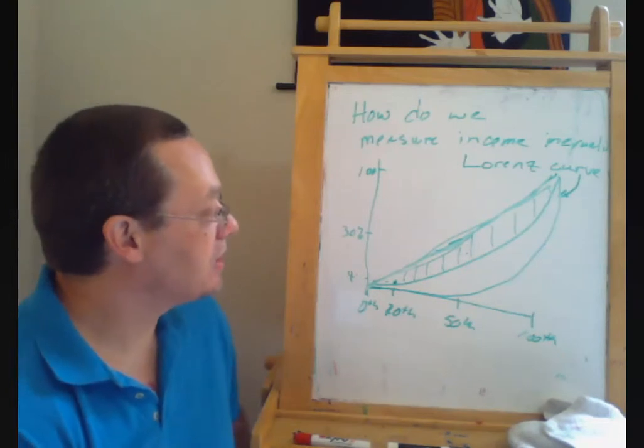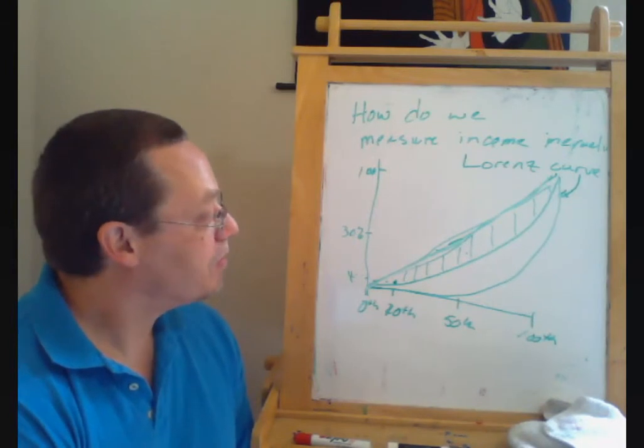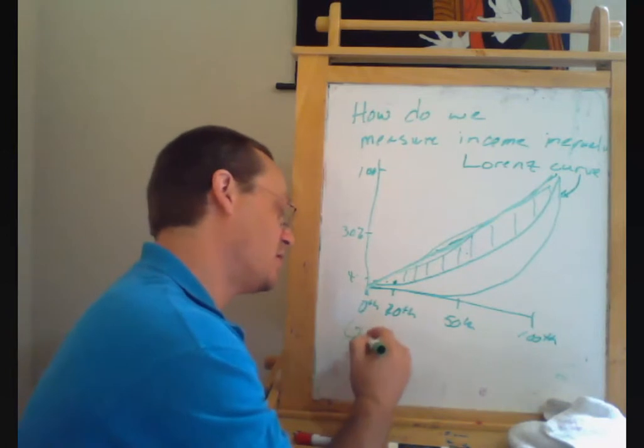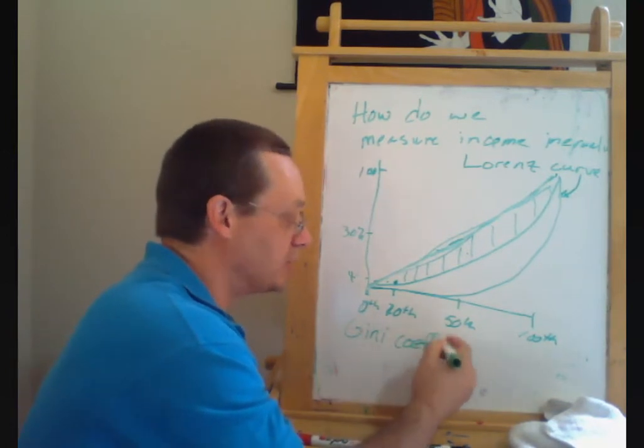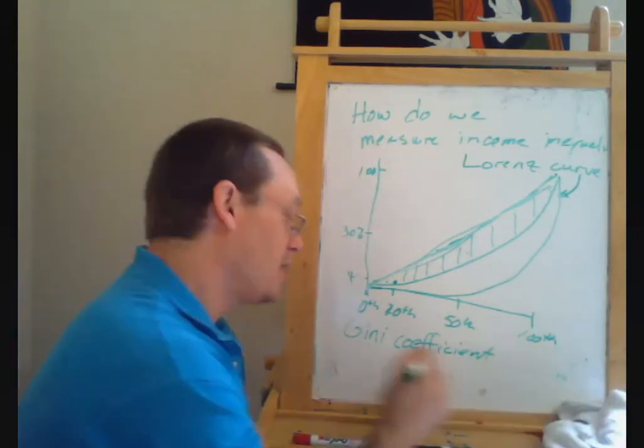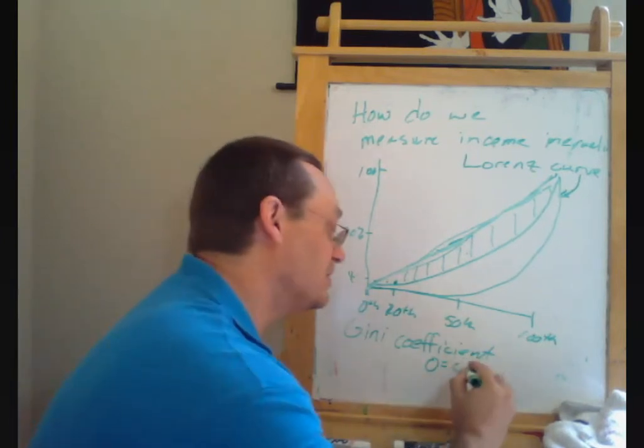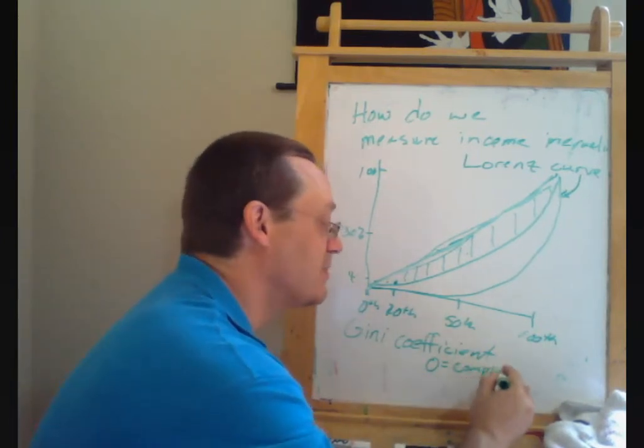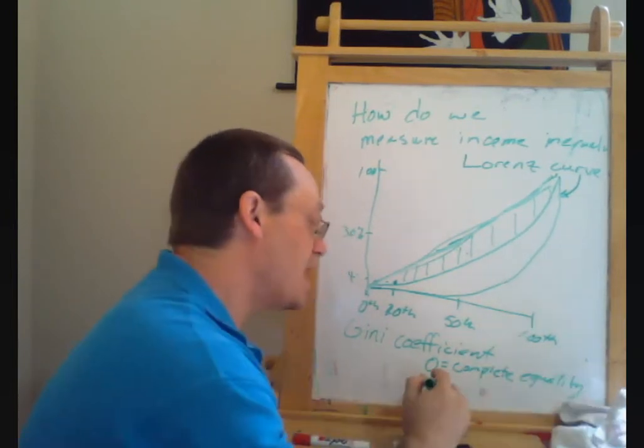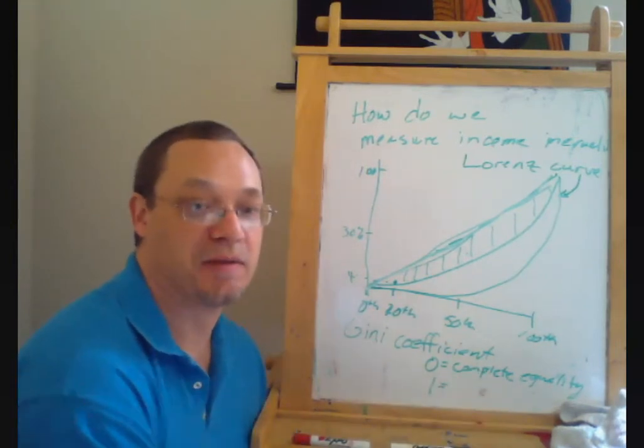So the bigger this area between this 45-degree line and the Lorenz curve, the higher the level of inequality. So what we can do here is we can take the area there and multiply it by two. And what happens there is we've gotten what's called the Gini coefficient, and the Gini coefficient is going to be zero if there's complete equality, just absolute. Everyone has exactly the same income. And it's going to be one if we have complete inequality. Everyone has zero income except for one person.